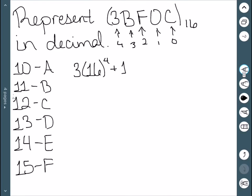So here I have 3 times 16 to the 4th power, plus B represents 11 times 16 to the 3rd power. F represents 15 times 16 squared. I also have a 0 times 16, so that would just be 0, and then plus C, which is 12.